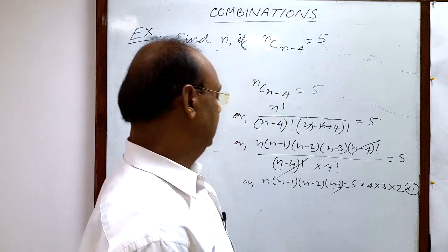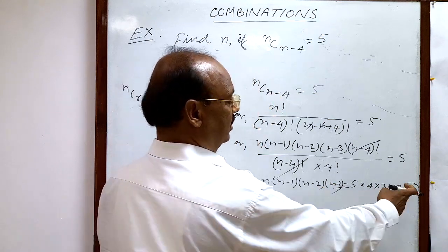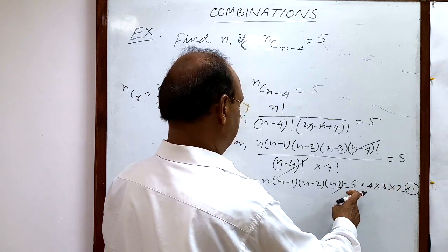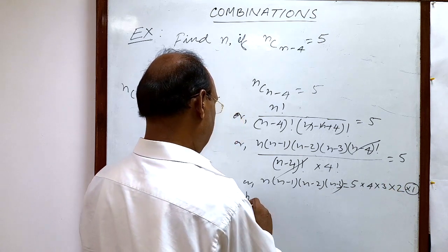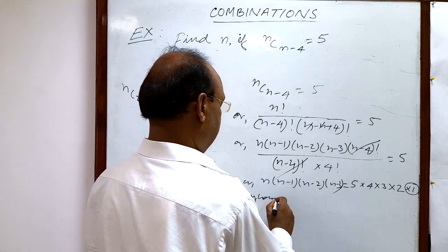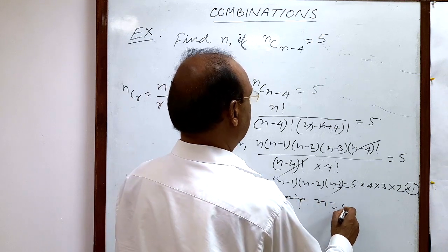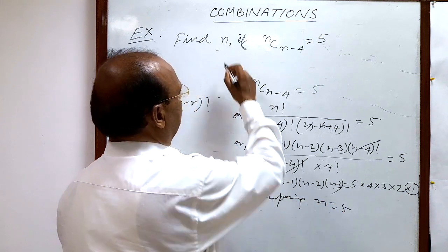On the left-hand side, the greatest number is n. On the right-hand side, the greatest number is 5. So directly by comparing LHS and RHS, we can write n is equal to 5. So we are getting the value of n, which is 5.